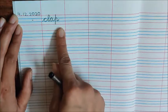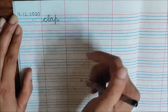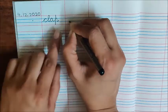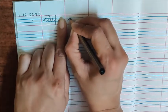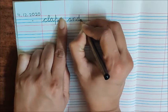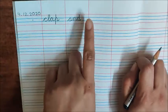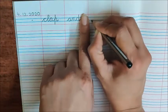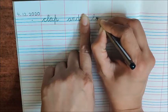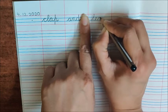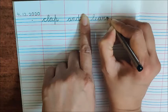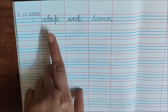You all know how to write clap. Write it yourself. After writing clap, leave one finger space and write down: A, N, D — and. Clap. Again leave one finger space. Write down here: Learn. L, E, A, R, N. Clap. And learn.